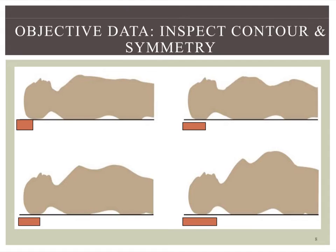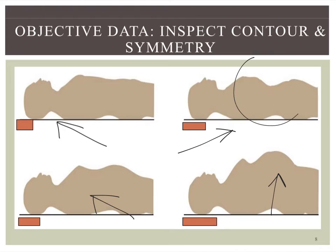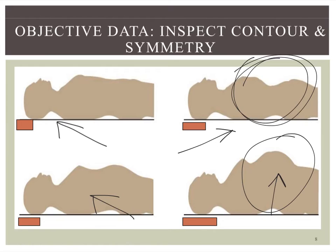These abdominal contour shapes come straight from the book. The first would be flat — best assessed from the side. The second is scaphoid. The third is rounded. And the fourth is protuberant. Scaphoid and protuberant could be our abnormals: scaphoid may suggest malnutrition or anorexia, while the protuberant or distended abdomen is also considered abnormal. We're assessing whether the abdomen is symmetrical and looking for masses, hernias, and bulges.